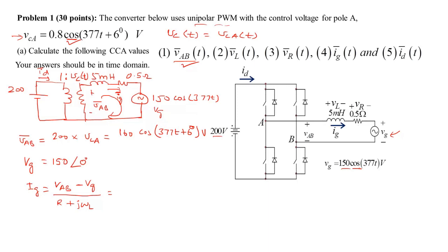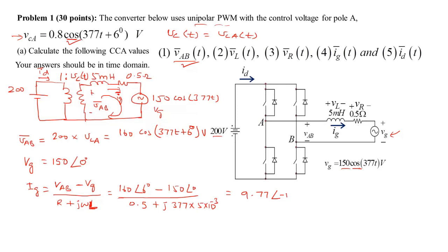Vab as a phasor is 160∠6°. So Ig equals (160∠6° − 150∠0°) divided by (0.5 + j·377·5×10⁻³). Solving this complex equation gives Ig = 9.77∠−13.75° amperes. This solves part A for the grid current.